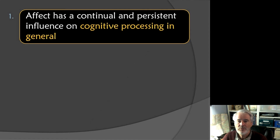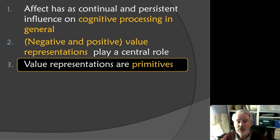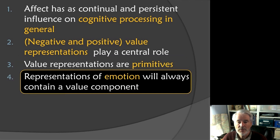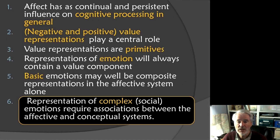To summarise: first, affect has a continual and persistent influence on cognitive processing in general. Second, negative and positive value play a central role — they are representations in the affective system. Third, these value representations are primitives, part of our biological starter set. Fourth, representations of emotion will always contain a value component, positive or negative. Basic emotions may be composite representations in the affective system alone. Finally, complex social emotions require associations between the affective system and the conceptual system to give them those extra layers of meaning.